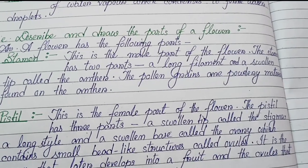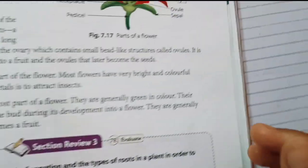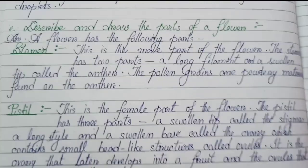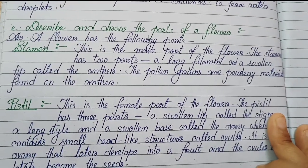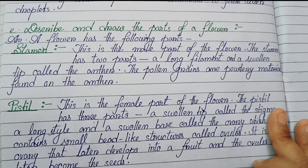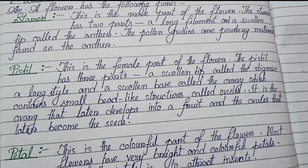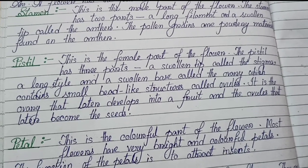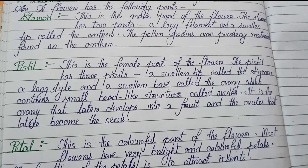Number (e): Describe and draw the parts of a flower. You should draw the diagram from the book. The flower has the following parts. Stamen: this is the male part of the flower; the stamen has two parts — a long filament and a swollen tip called the anther; pollen grains are powdery material found on the anther. Pistil: this is the female part of the flower; the pistil has three parts — a swollen tip called the stigma, a long style, and a swollen base called the ovary, which contains small bead-like structures called ovules. It is the ovary that later develops into a fruit and ovules that later become the seeds.